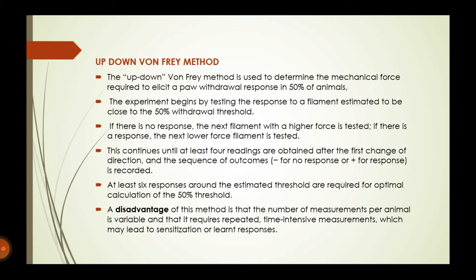In the up-and-down method, if there is no response, the next filament with higher force is tested; if there is a response, the next lower force filament is applied. At least six responses at the estimated threshold are required for optimal calculation of the 50% threshold. A disadvantage is that the number of measurements per animal is variable and requires repeated time-intensive measurements, which may lead to sensitization or learned responses.